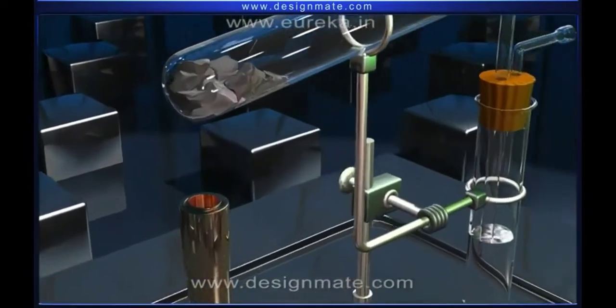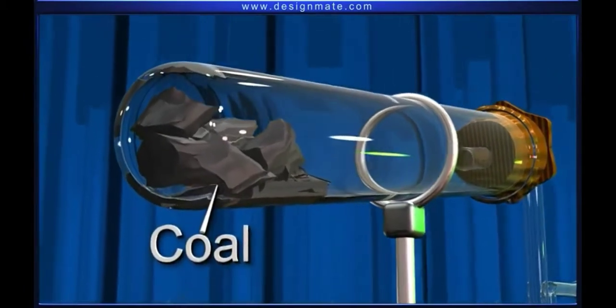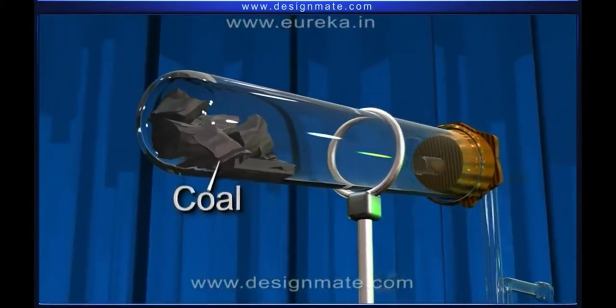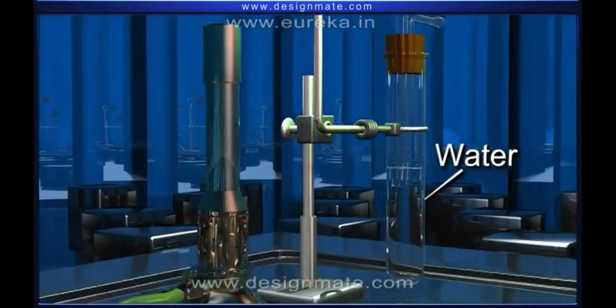Arrange the apparatus as shown. The horizontal glass tube contains some crushed pieces of coal, while the vertical glass tube is filled with some amount of water.